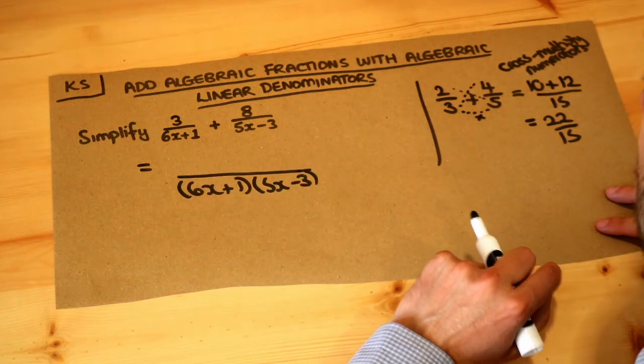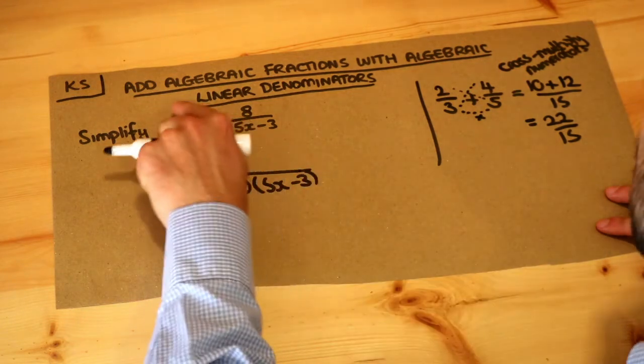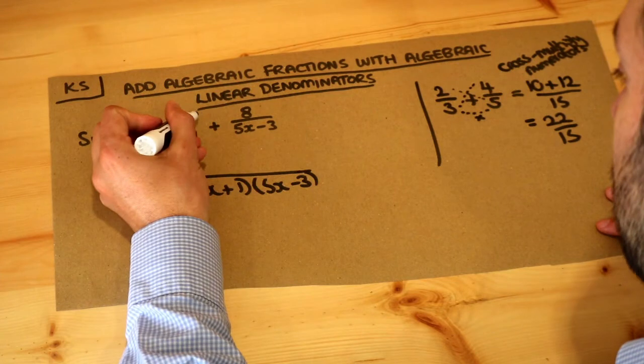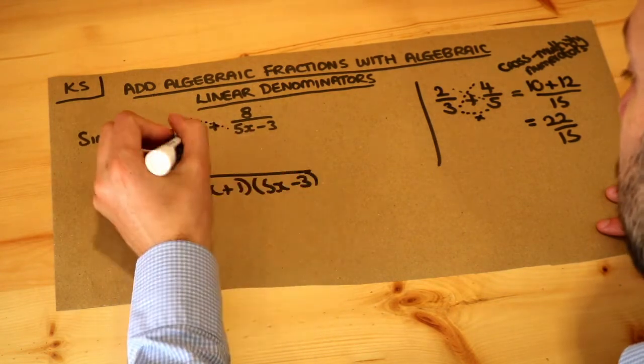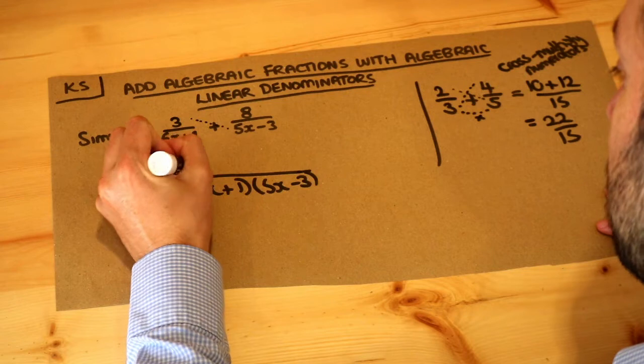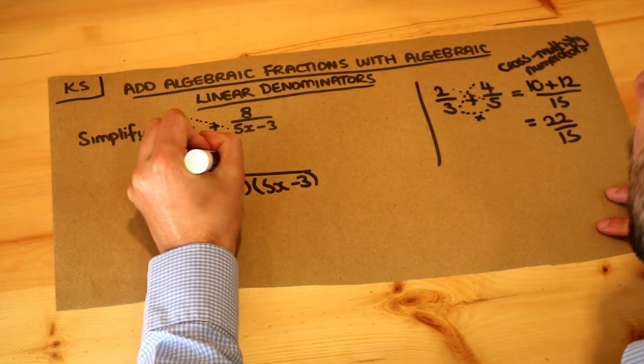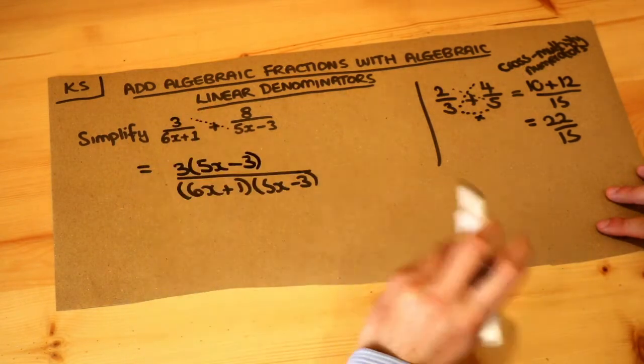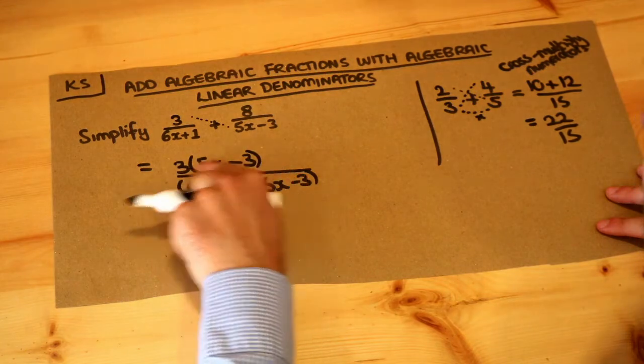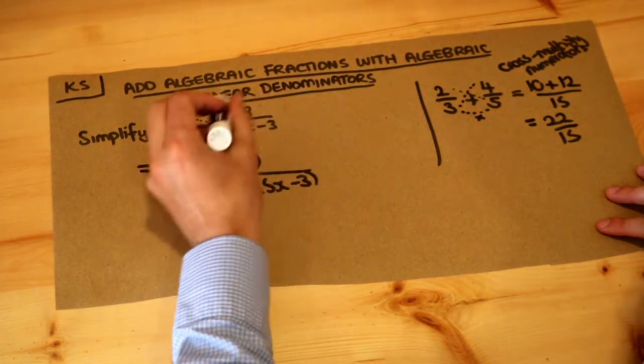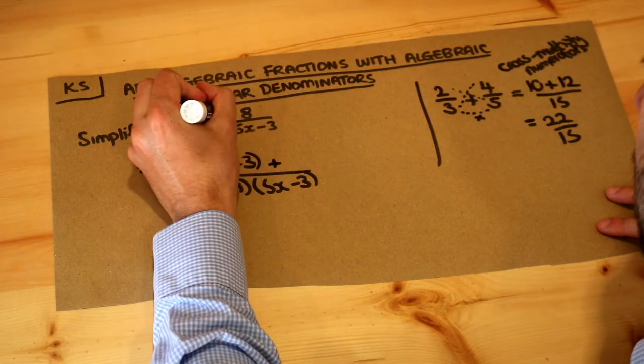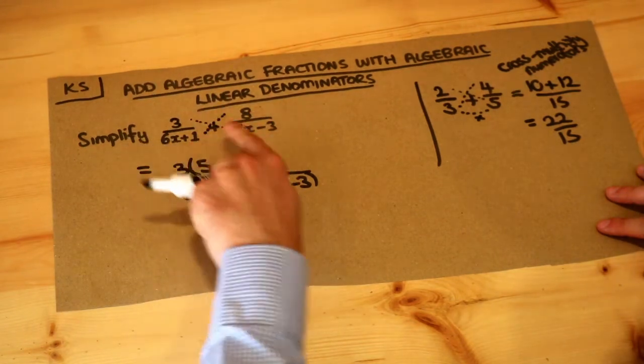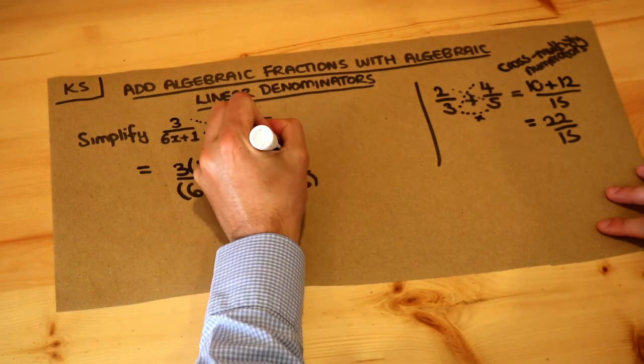But then we do need to cross multiply with the numerators. So we do that times that in a diagonal fashion. I'm not going to expand out yet, I'm just going to write 3 times 5x-3. Never use the times symbol in algebra, always use brackets to have the multiplication of two things. Then we've got the plus in the middle, and then this other diagonal to form the cross: 8 times 6x+1.